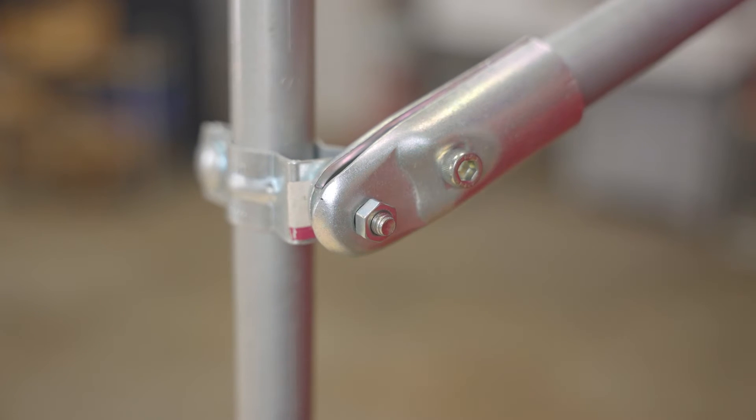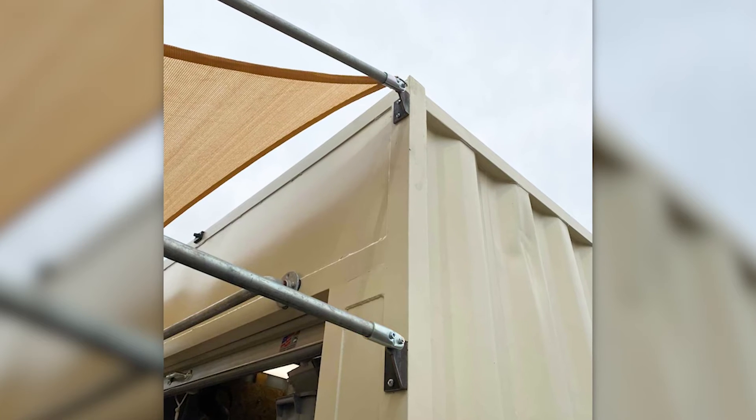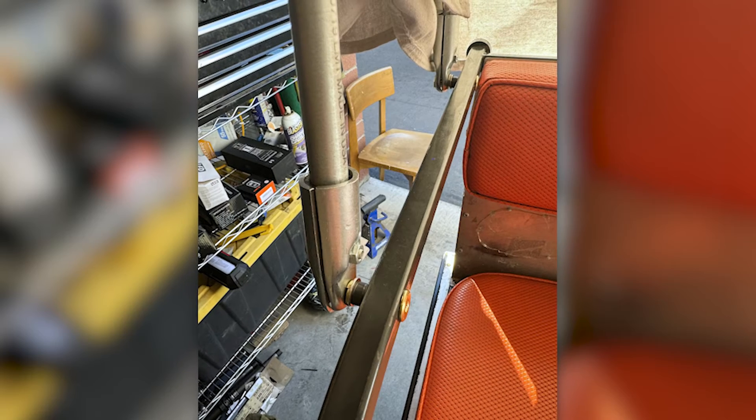The end clamp is commonly used by itself to add a mounting point to the end of a piece of conduit. Most commonly we've seen builders combine end clamps with custom brackets to create unique mounting solutions.